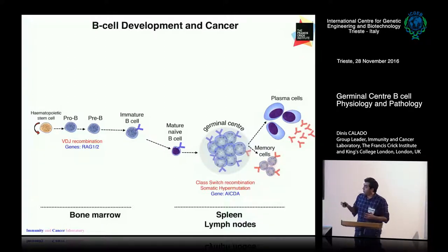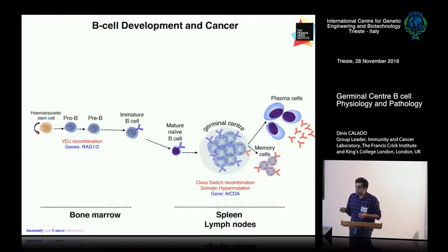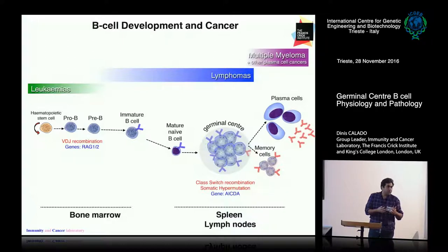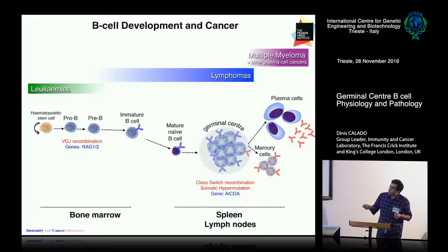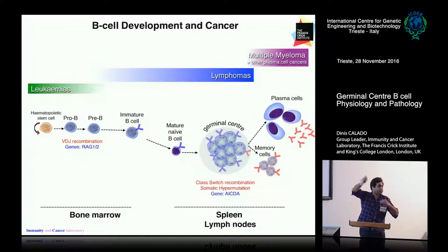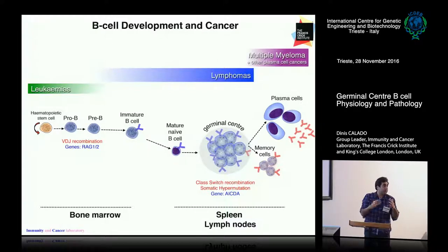Of course, there are processes that go on here at early stages of development as well as at the germinal center stage that may actually prone normal B-cells to become cancerous. The fact that cells undergo processes of DNA recombination early in their development may prone them to processes of translocation — that is, creating breaks on the DNA that may join illegitimately with another break from another portion of the genome. If a strong promoter comes into place with an oncogene, you may have overexpression of that protein and then deregulated proliferation.